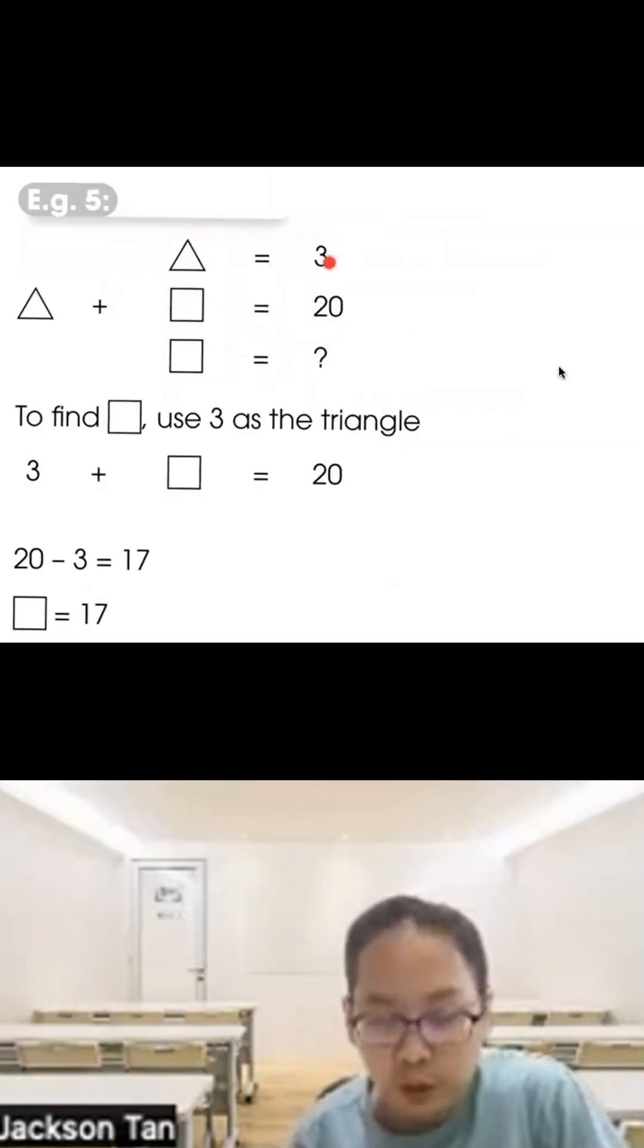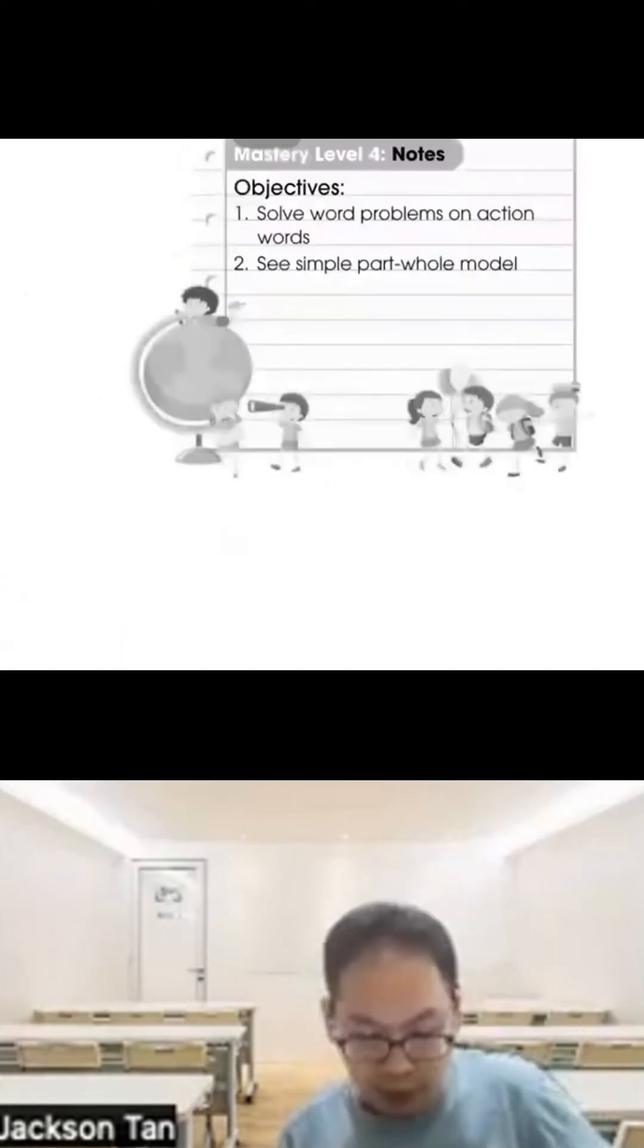Example 5: Triangle equals 3. Triangle plus square equals 20. What is the square? When you compare, you know the triangle is 3, so to find the square, do 20 minus 3 to get 17. Three plus 17 equals 20, so the square equals 17.